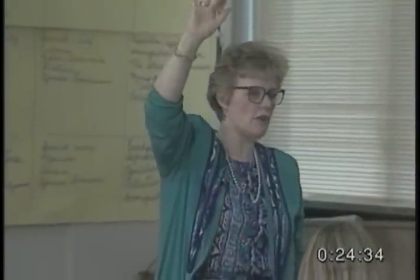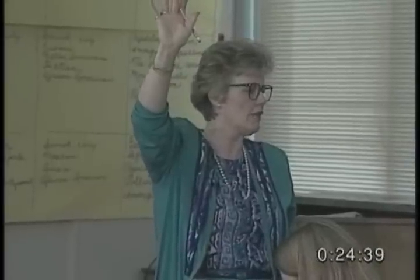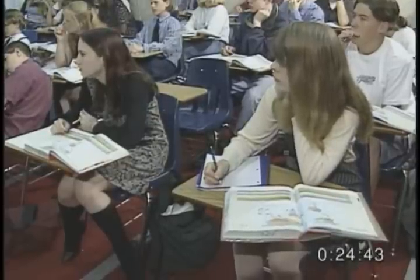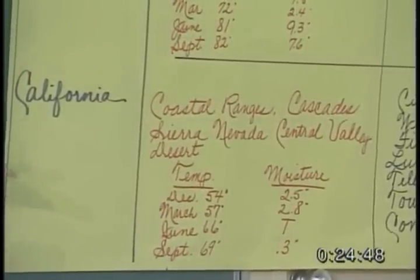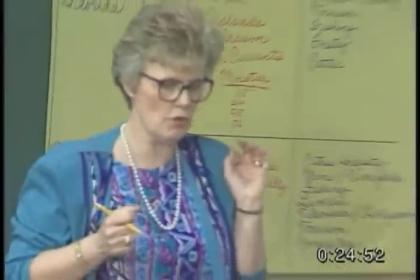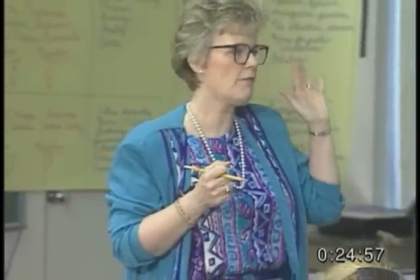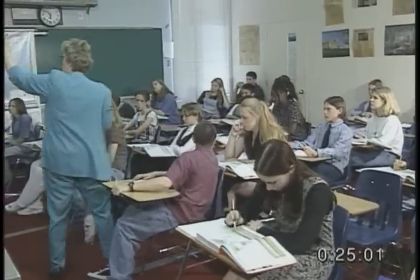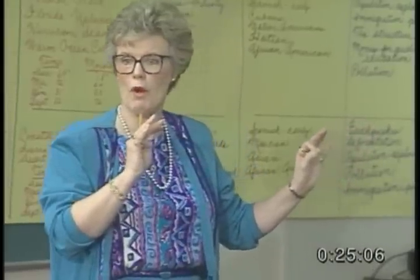We've worked on this project actually about three, three and a half days, and this lesson is kind of a culmination of that, and we're going to deal with some higher order thinking skills. First thing I want you to do is we're going to deal with the geography column. What I want you to do is get with your partner, and I want you to write three differences and similarities on just the geography portion of the chart.